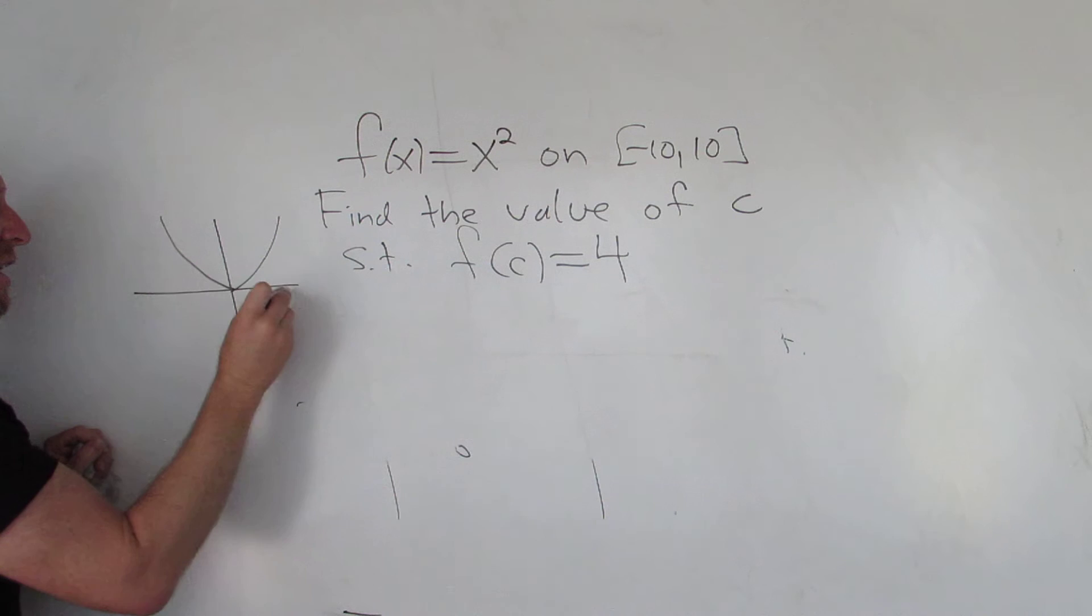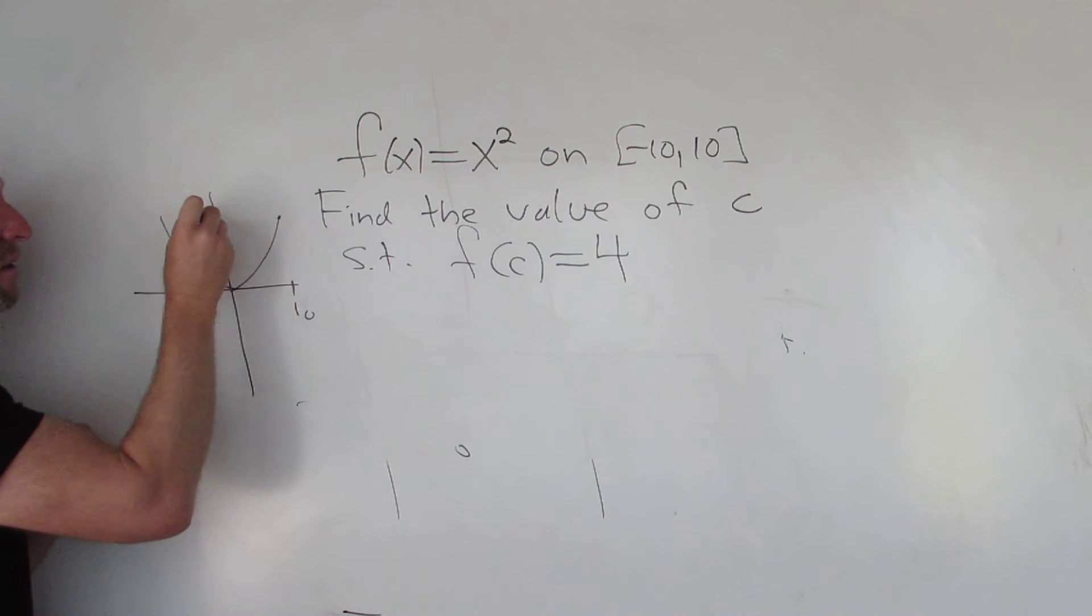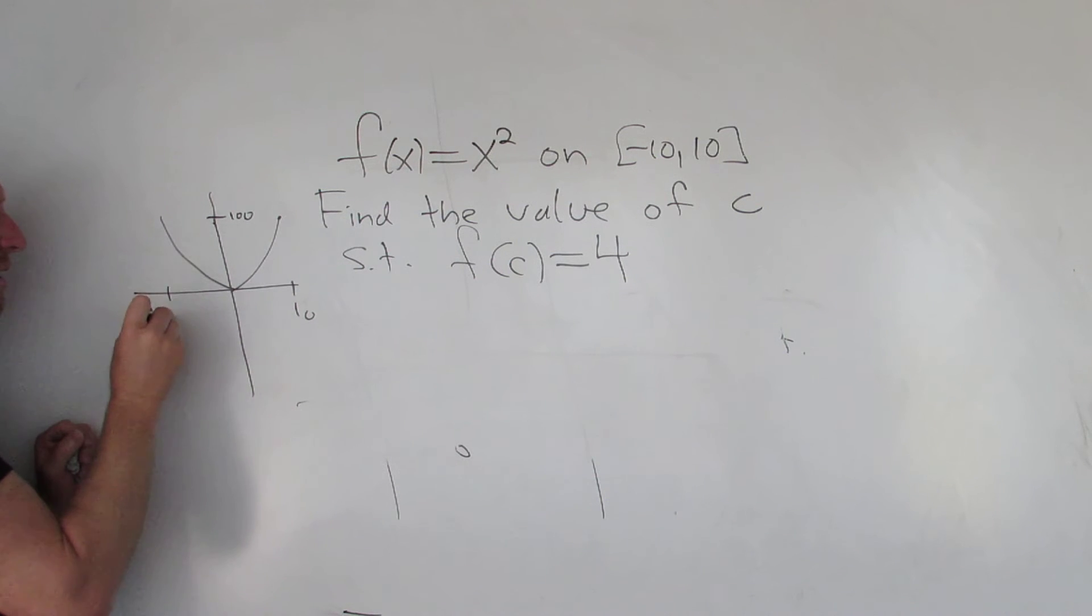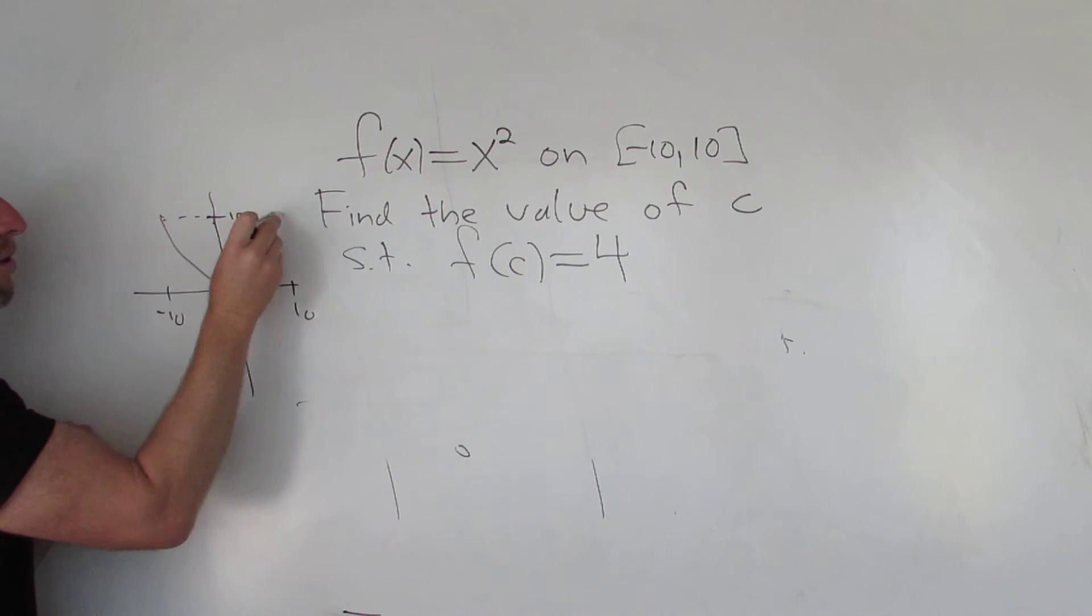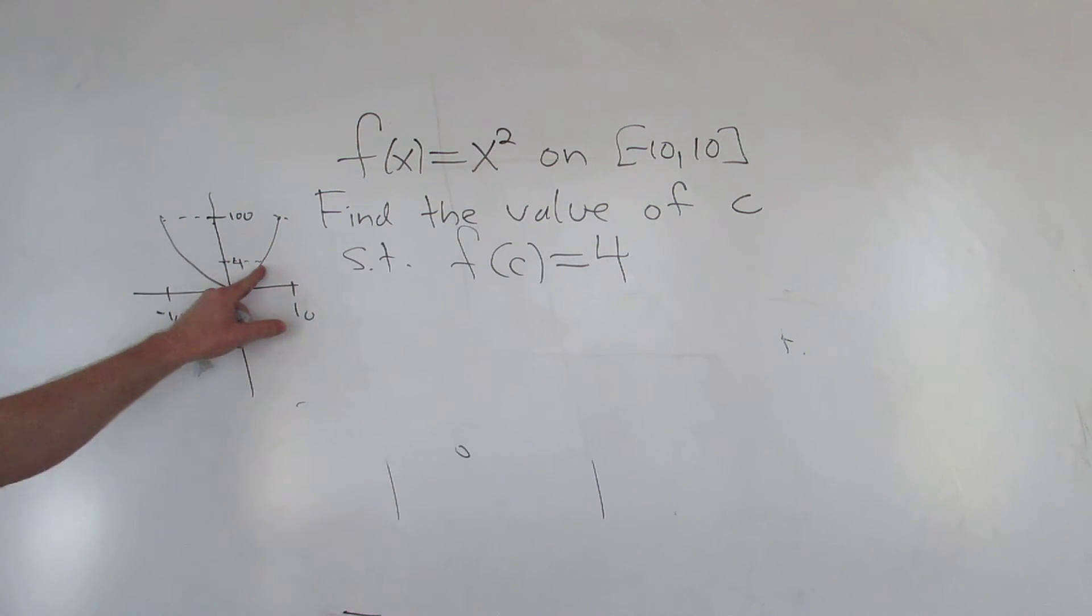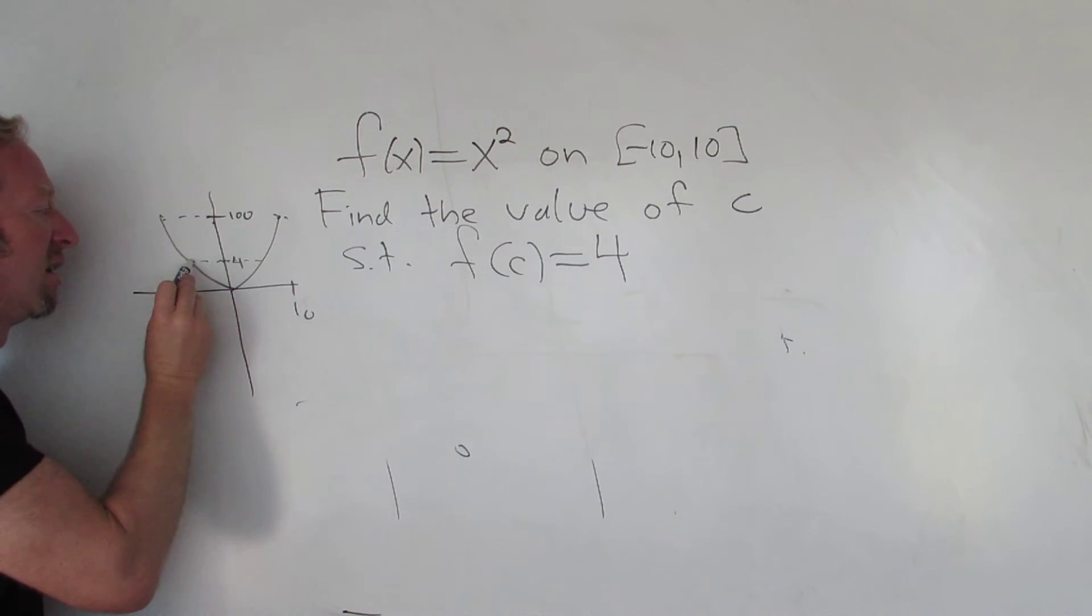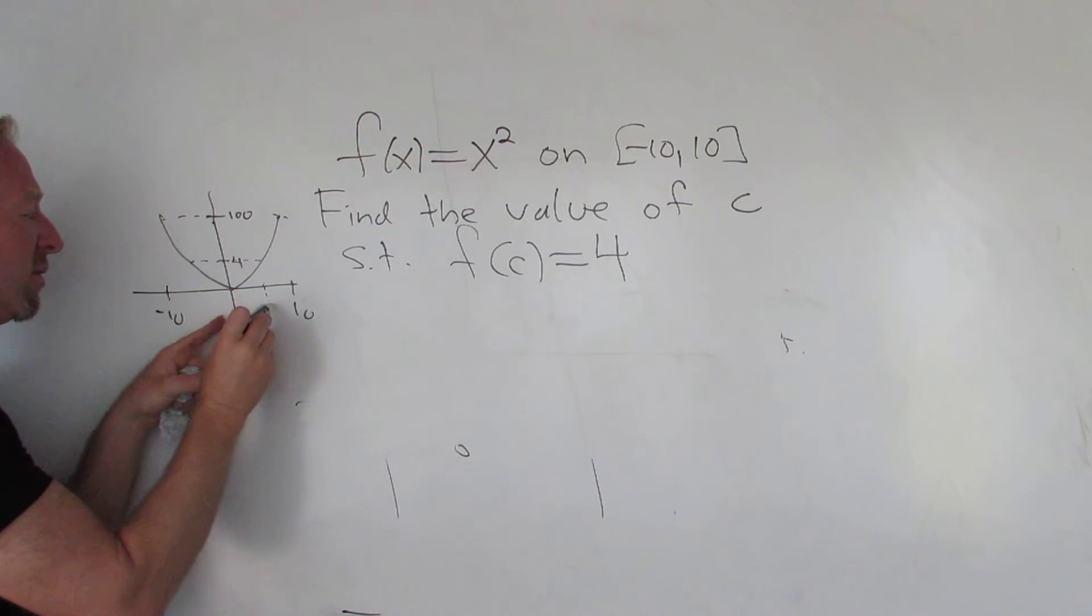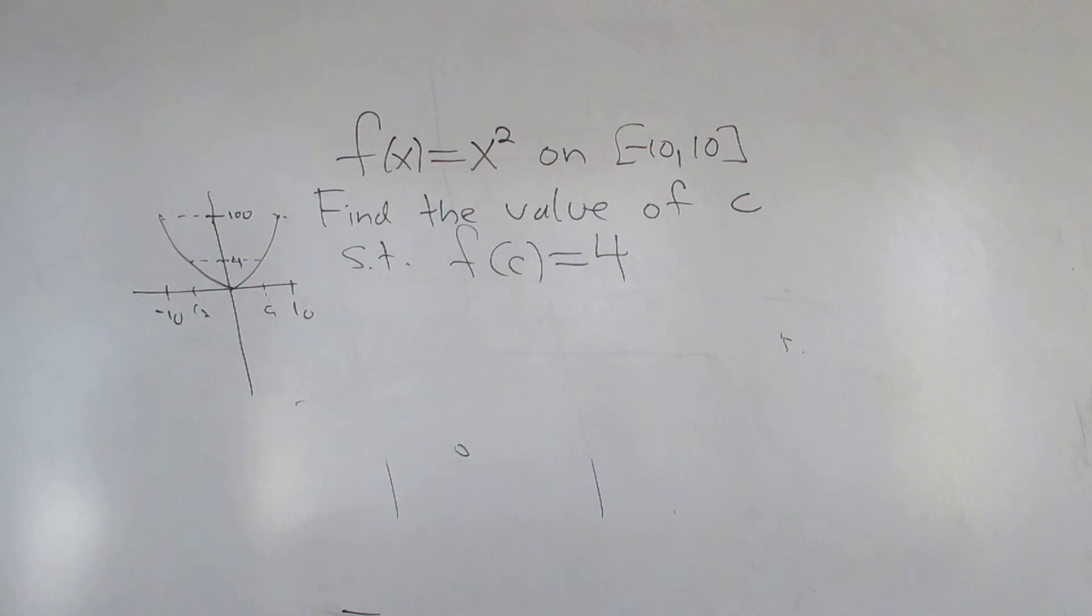x² is a parabola. It looks like this. If this is 10, then 10² is 100. And this would be -10. So the value of 4 - if you pick 4, it's not drawn to scale - there's values of C. In fact, there's two values of C such that F of those values is equal to 4: C1 and C2.